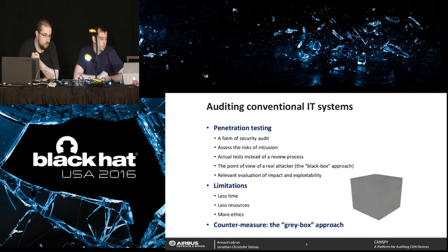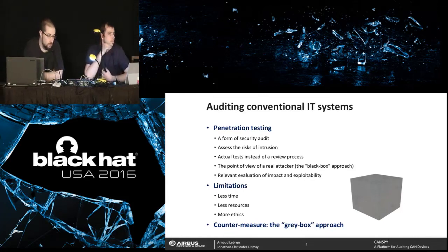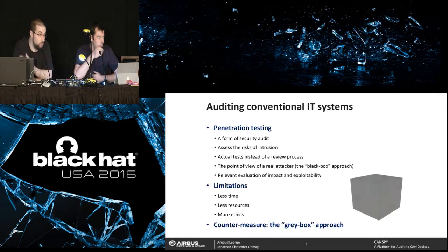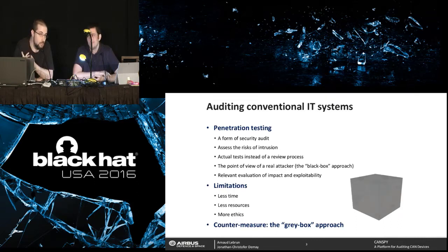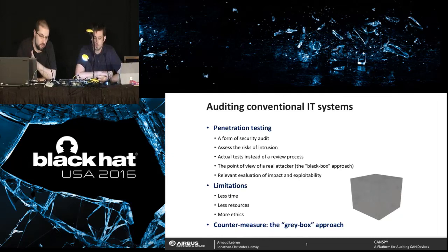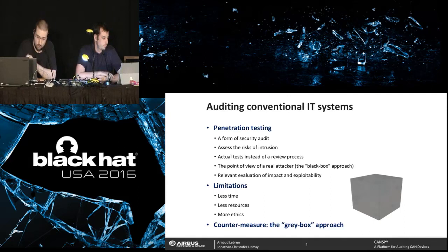The main advantage of this approach is getting really relevant results because you place yourself in the shoes of real attackers. When you find and exploit a vulnerability, you know the actual impact, how hard it is to exploit, and what level of attacker skill is needed — that's called exploitability. However, there are limitations compared to real attackers: we have less time because we are costly resources, less resources overall, and more ethics — we cannot damage the scope we're auditing. That's why, more than black box, we talk about gray box.